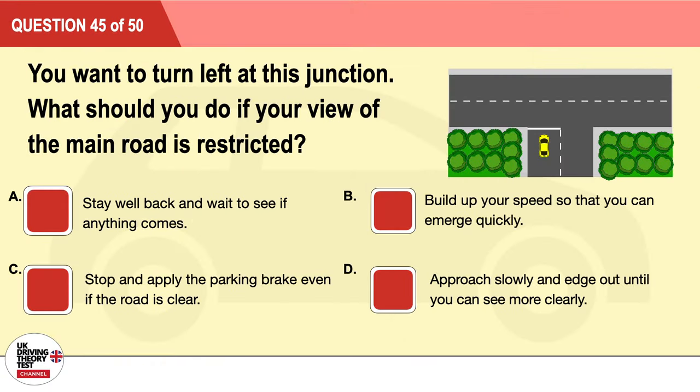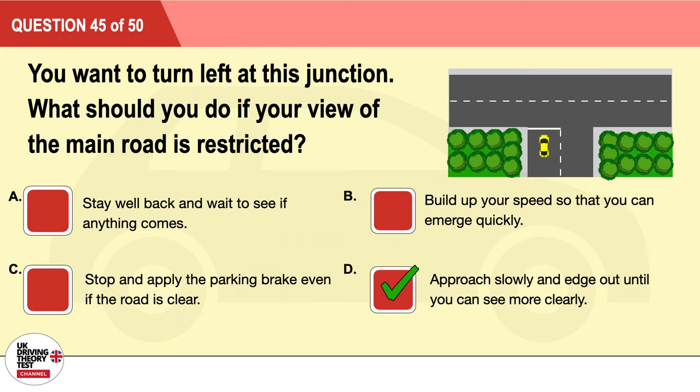Question 45: You want to turn left at this junction. What should you do if your view of the main road is restricted? A: Stay well back and wait to see if anything comes. B: Build up your speed so that you can emerge quickly. C: Stop and apply the parking brake even if the road is clear. D: Approach slowly and edge out until you can see more clearly. The correct answer is D: approach slowly and edge out until you can see more clearly.